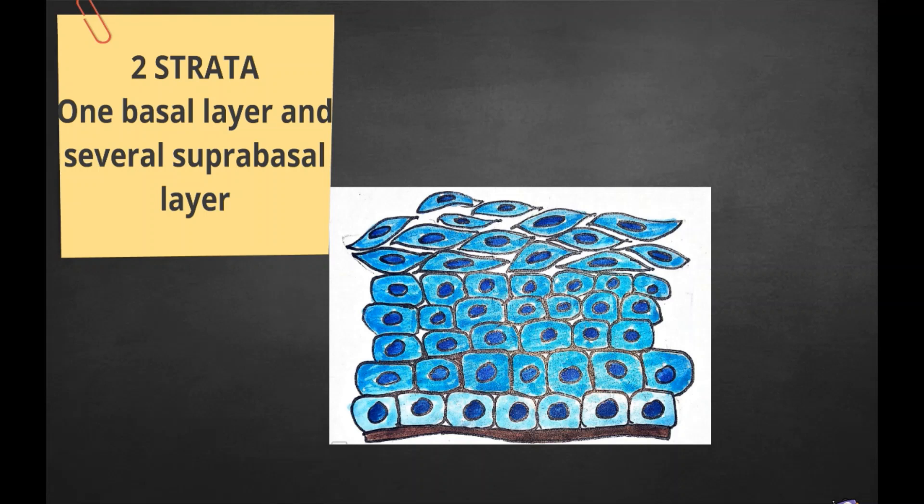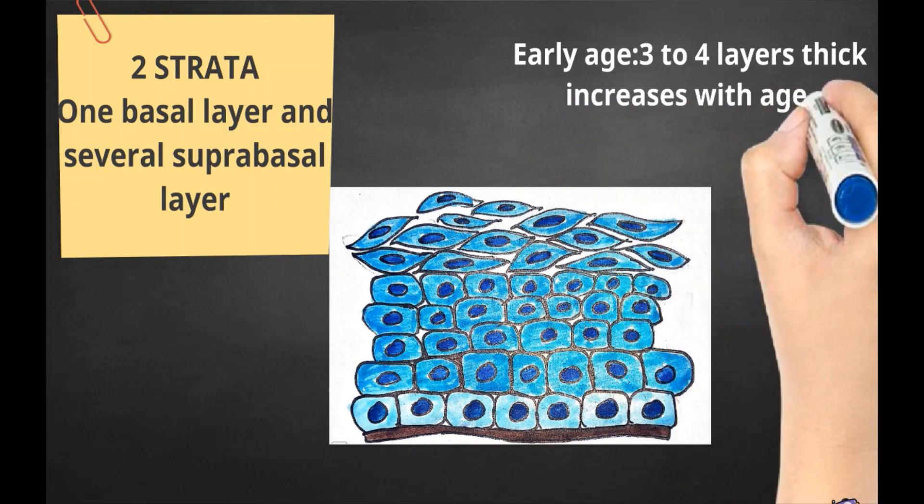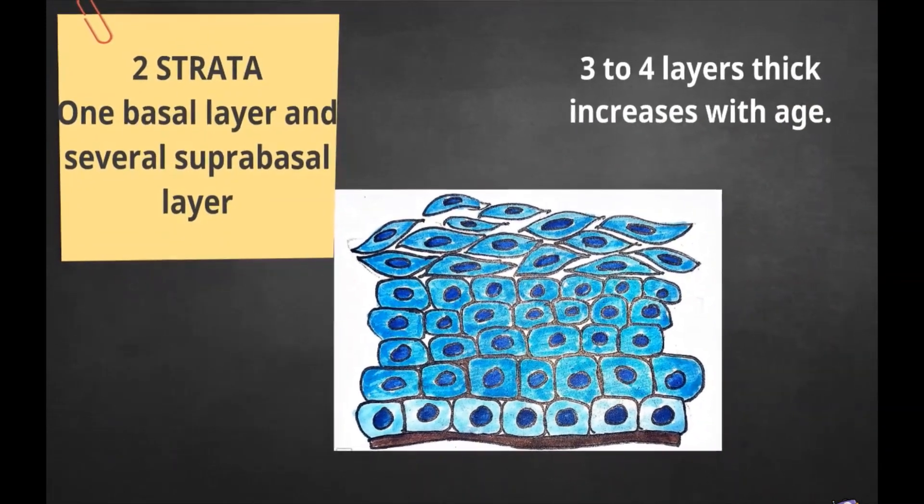It is three to four layers thick in early life, but the number of layers increases with age to 10 or even 20 layers.